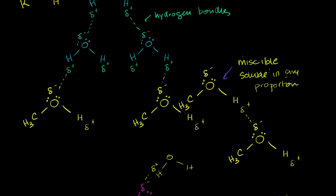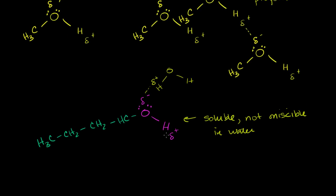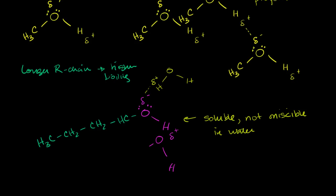Alcohols have a reasonable boiling point because of hydrogen bonding. You might expect longer carbon chains to have less hydrogen bonding and thus lower boiling points, but actually the longer the chain, the higher the boiling point. That's because these chains can interact with each other through van der Waals forces. Consider two butanol molecules side by side — the long carbon chains interact through London dispersion forces, which are a subset of van der Waals forces.